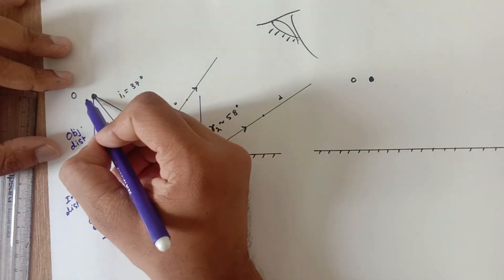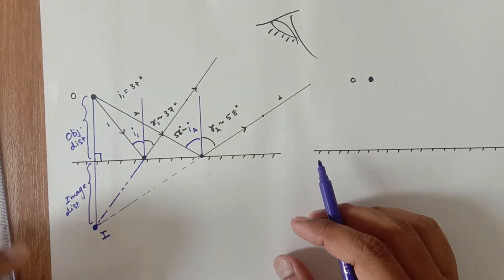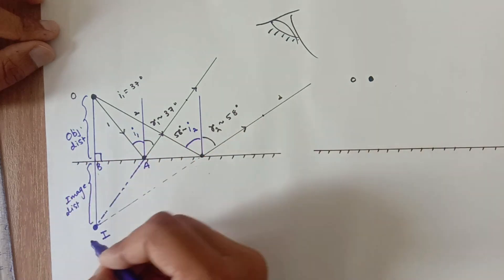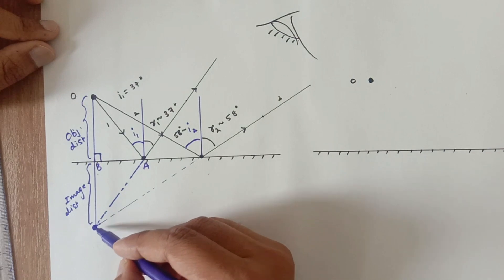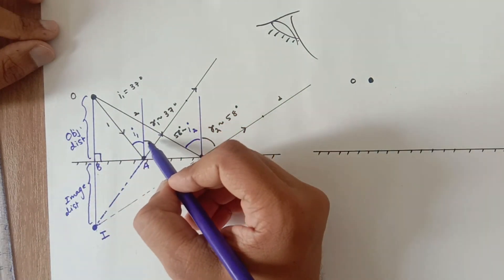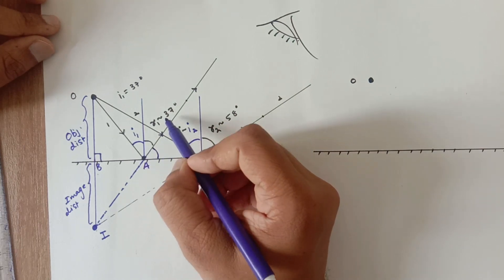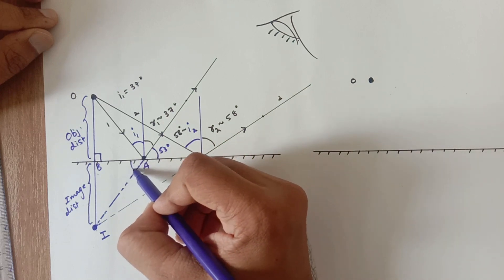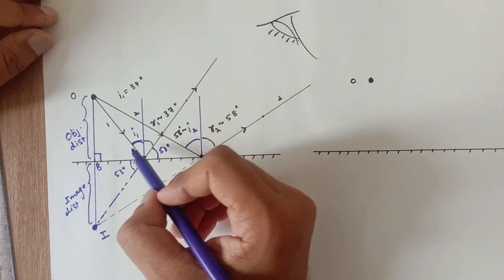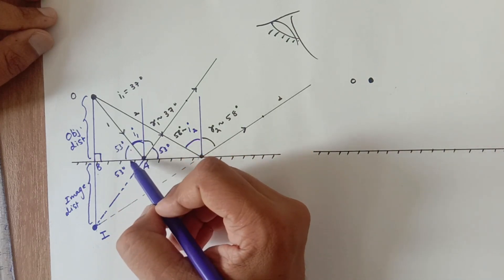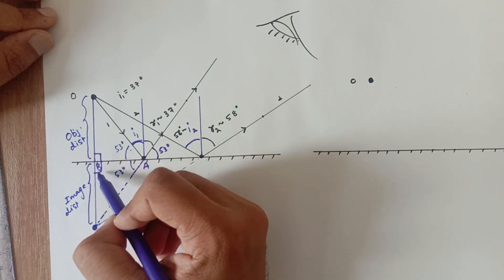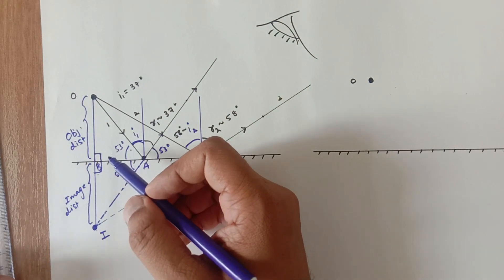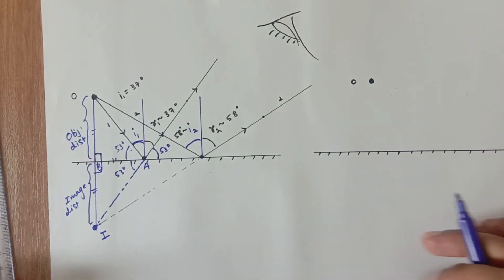I can prove these two distances are mathematically equal. Naming the points O, A, B and I, A, B: triangles OAB and IAB are congruent. Since angle i1 is 37°, the complementary angle is 53°; vertically opposite angles are also 53°. With two equal angles and a common side AB, by Angle-Side-Angle the triangles are congruent, so the object distance equals the image distance.